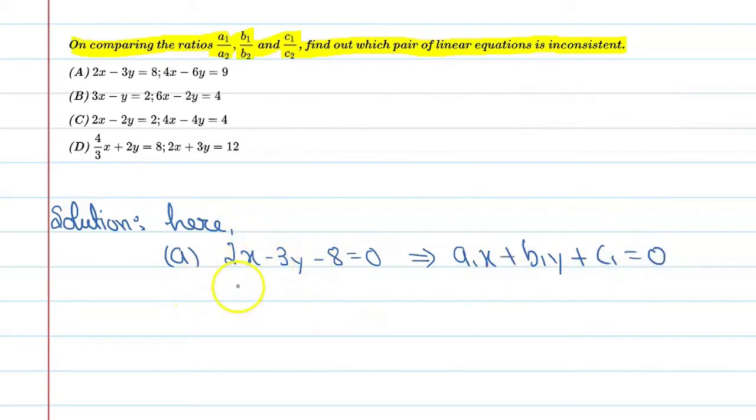The second equation of option A is 4x minus 6y minus 9 equal to 0. And the second equation is A2x plus B2y plus C2 equal to 0.